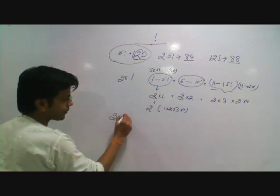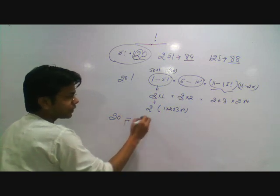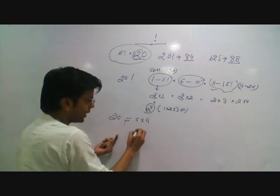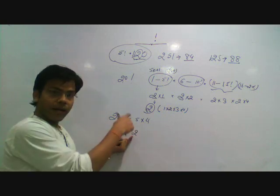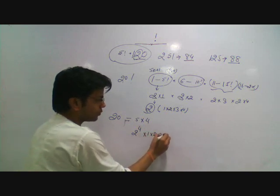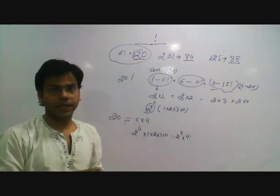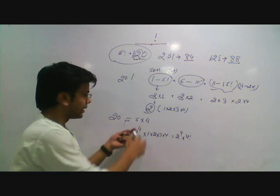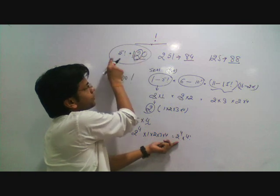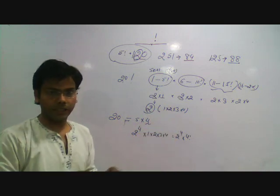So for 20 factorial directly: 20 = 5 into 4, giving 4 bundles of 5. For each bundle we get 2, so we get 2 raised to power 4. And for 20, we have 1 into 2 into 3 into 4, that is 4 factorial. So we get 2 raised to 4 into 4 factorial. The number of bundles of 5 raises the power of 2 — because 5 factorial has 2 as its last non-zero digit.